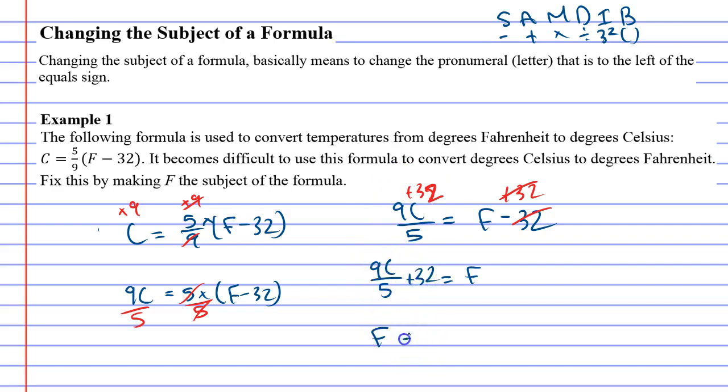And now we can swap them over and say, well, F must equal 9C over 5 plus 32. And we've actually done it. We've rearranged the equation so that F is the subject.